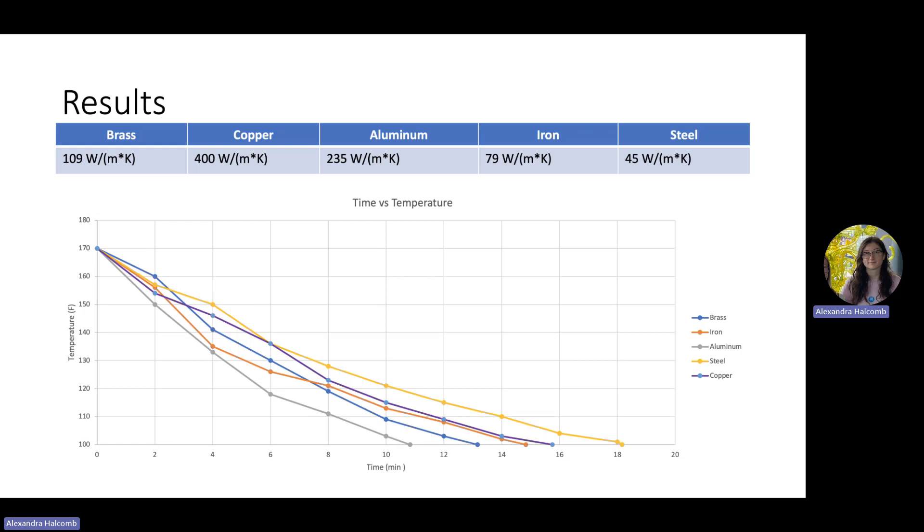Four out of five of these operated as expected. A higher thermal conductivity should mean that it loses heat faster. It conducts heat faster.